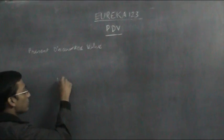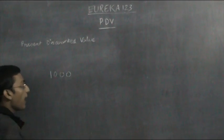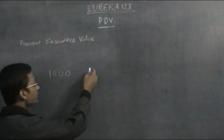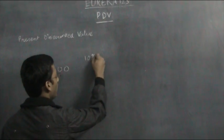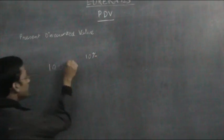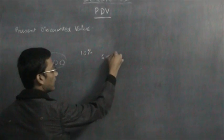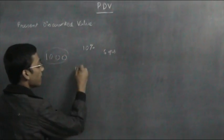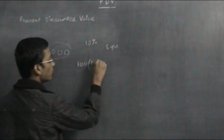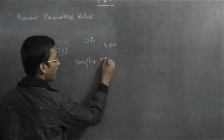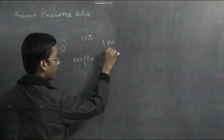Suppose I have 1000 now and I deposit it at an interest rate of 10%. What will this 1000 become after 5 years? It will become 1000 into (1 + 10/100) to the power of 5.